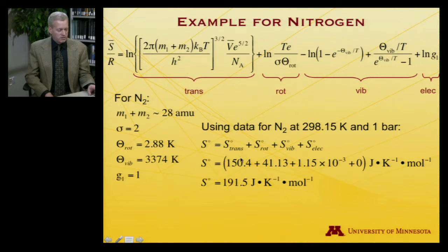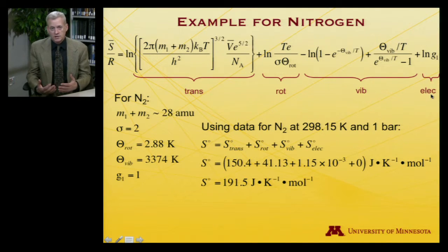150.4 joules per Kelvin per mole deriving from this first term, translation. 41.13 from rotation. 1.15 times 10 to the minus third, so that's really quite small compared to these other two terms, from vibration, none at all from the electronic degeneracy. Because really there's no disorder associated with the electronic state. It's in exactly one state, the ground state. And so there's no entropy because there's no disorder. Similarly, this vibrational temperature is so high, 3,374 Kelvin, that effectively all the vibrations are in the ground state. So again, not much disorder there. And it only contributes a thousandth of a joule per Kelvin per mole.